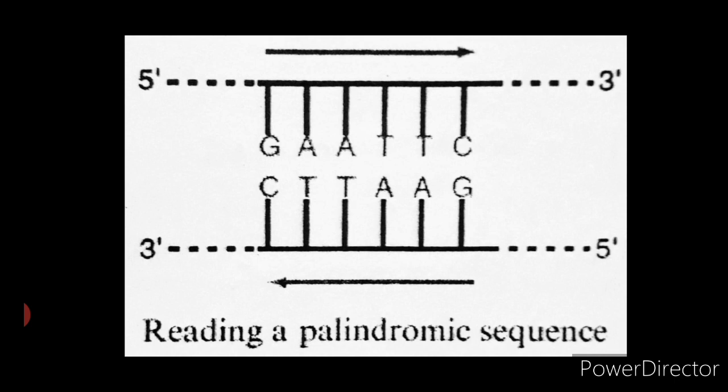The base sequences of each of the two DNA strands are identical when read in five prime to three prime direction. Because of this, base pairs on either side of a central line of symmetry are mirror images of each other. If you all can see in the figure, the base pairs are identical or mirror images of each other.